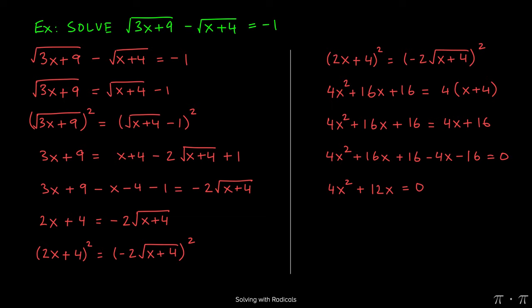Now at this stage we can recognize that we have a GCF of 4x, so we can factor it out, leaving behind x plus 3 inside the parentheses, equaling zero.